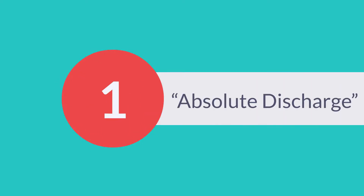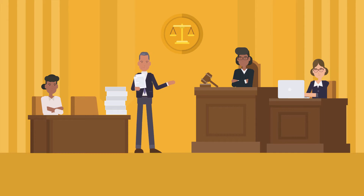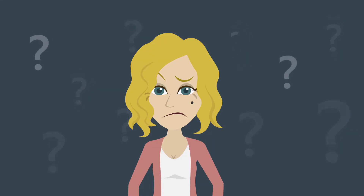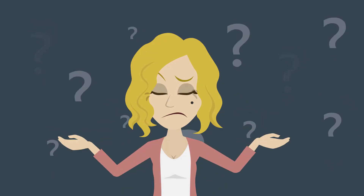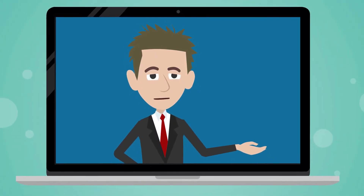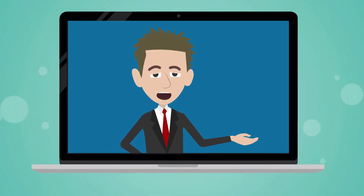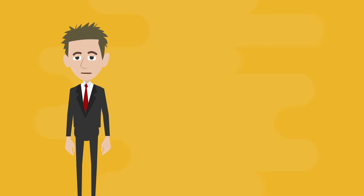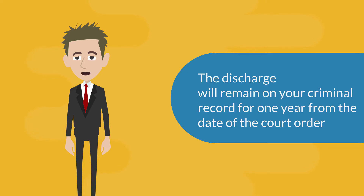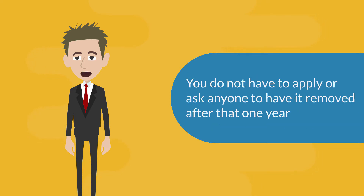The first type of punishment is called an absolute discharge. If the court orders an absolute discharge, you will be free to go and no conviction will be registered. However, your guilt is still recorded. The idea behind an absolute discharge is to avoid placing the stigma of a criminal conviction upon the guilty person. It is the lowest level sentence an adult can get, and you will not have to return to court or report to a probation officer. The discharge remains on your criminal record for one year and is then automatically removed.